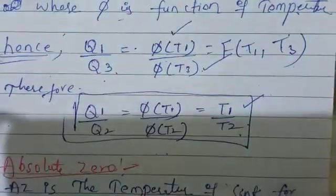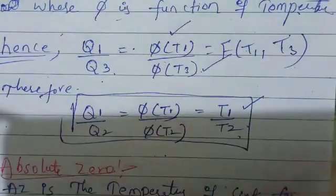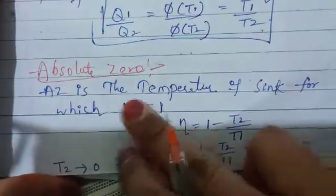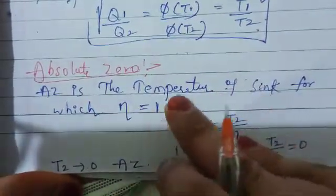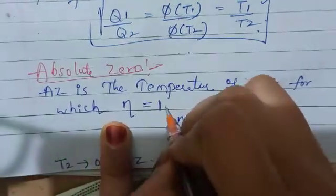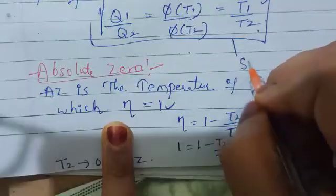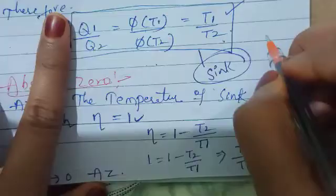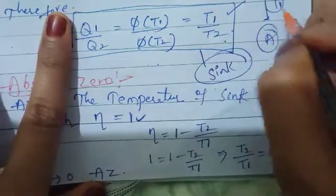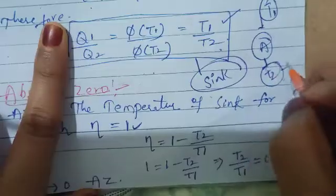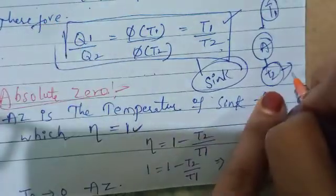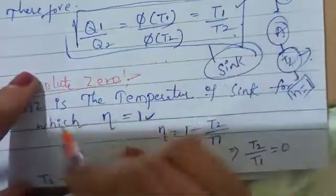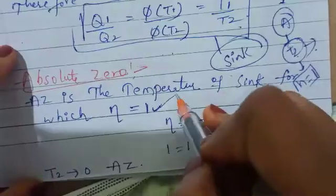Hence the Kelvin scale of temperature is proved. Now for a two-mark question: absolute zero is the temperature of the sink for which the efficiency is equal to 1. So the sink temperature T2 in the case where efficiency equals 1 is known as absolute zero.